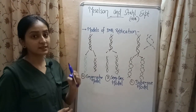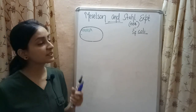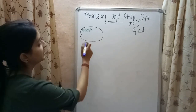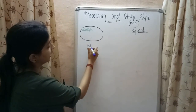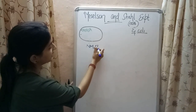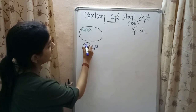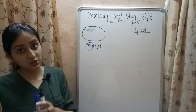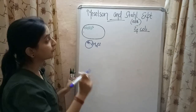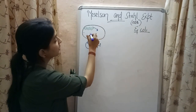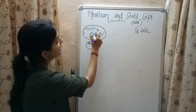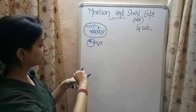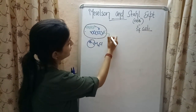Now let's come back to the experiment of Meselson and Stahl. They experimented with E. coli, growing it in a medium containing NH4Cl in which N was the N15 type, which is a heavier isotope of nitrogen. This E. coli was allowed to grow for several generations, and as a result they found that N15 got incorporated into the nitrogen bases of the DNA of the E. coli bacteria, so both the strands were now N15 type.